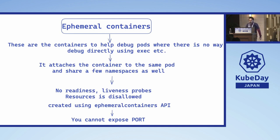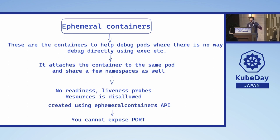That's where ephemeral containers come in. Ephemeral containers are containers that help debug pods where there's no way to debug directly using exec. You use kubectl debug to create them and they attach to the live pod — a new container is added to the pod spec's ephemeral containers section, and the ephemeral container status is automatically updated. It shares the same process namespace, so you can see the processes of the distroless container and view the file system. Note: it has no readiness/liveness probes and resource limits aren't allowed.